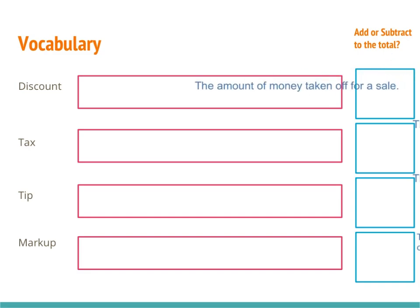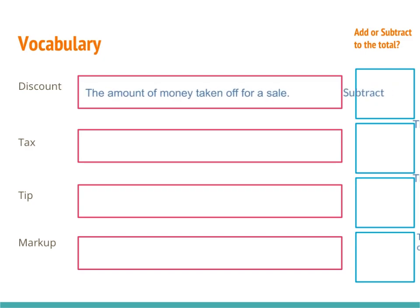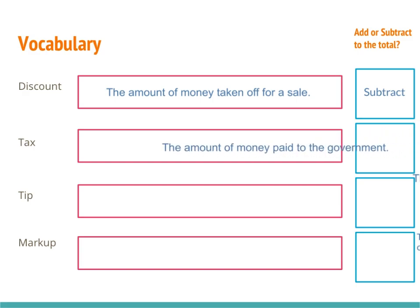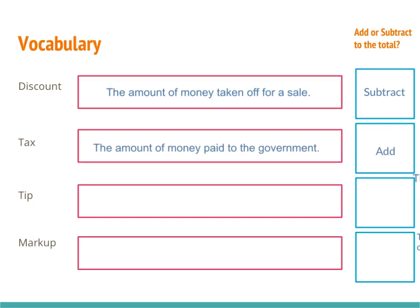When we talk about discount, discount is the amount of money taken off for a sale, and since we're going to be taking it off, that means we're going to be subtracting it from whatever our total is. Tax is the amount of money paid to the government — we're going to add that to our bill. Whenever you buy something and you have sales tax, you're paying a portion of that amount to the government.